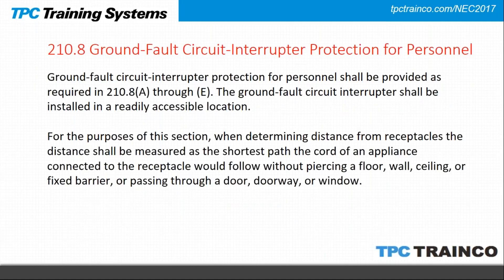Section 210.8 addresses GFCI protection for personnel and clarifies how to measure distances for GFCI requirements. The GFCI outlet must be readily accessible. For determining the distance from receptacles, the distance shall be measured along the path of the cord. For example, a receptacle under a sink for a garbage disposal — you measure how that cord would travel its path to determine if it is within six feet of the sink and therefore requires GFCI protection.